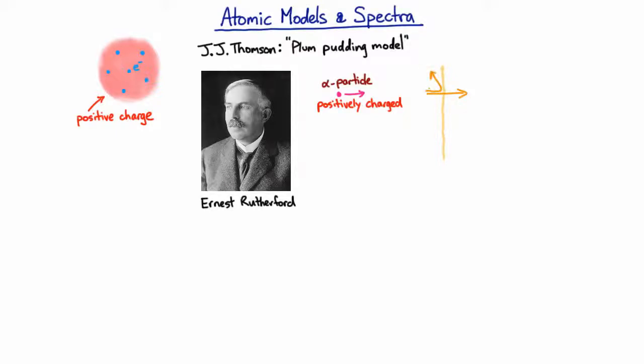But some of them bounced far more than Rutherford expected. And indeed, some of them more or less came straight back at the detector. So as they changed the angle of the detector, they could see what angle these alpha particles were being deflected by. And they saw some rare events where they bounced dramatically back. And Rutherford was rather startled by this.